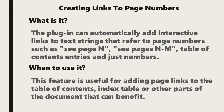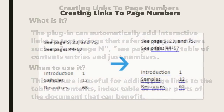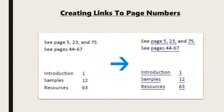The feature is useful for adding page links to a table of contents, index tables, or any part of a document that would benefit. Observe in this example how new links would look. Texts such as 'see page 5' or page numbers associated with entries in an index table become a visibly active link.